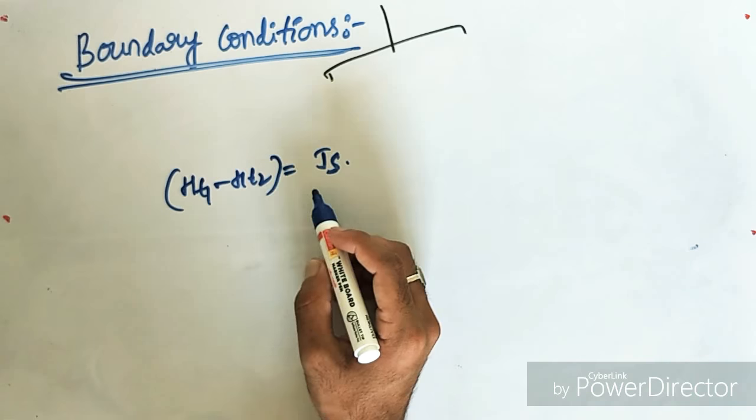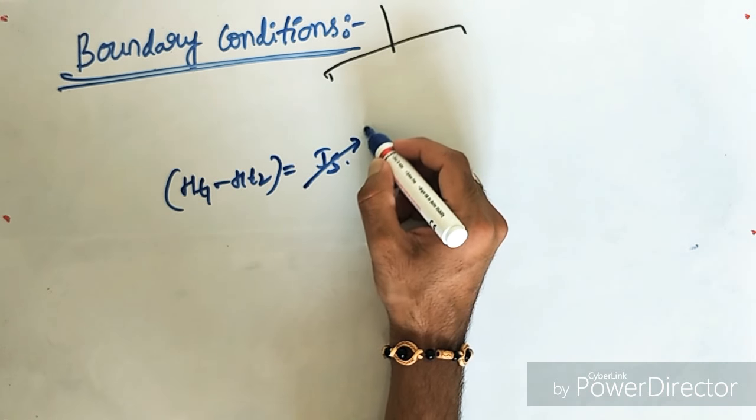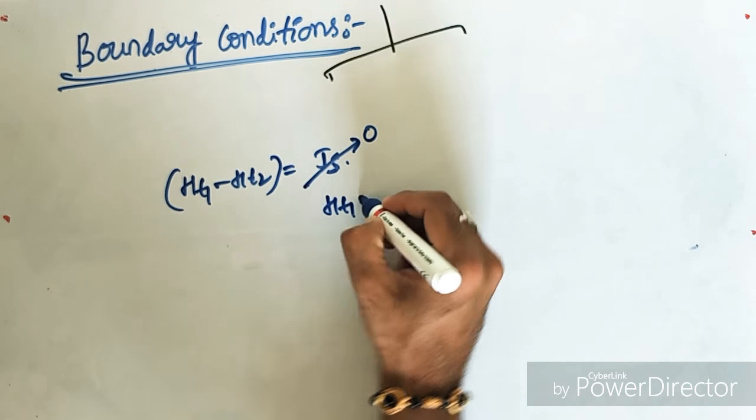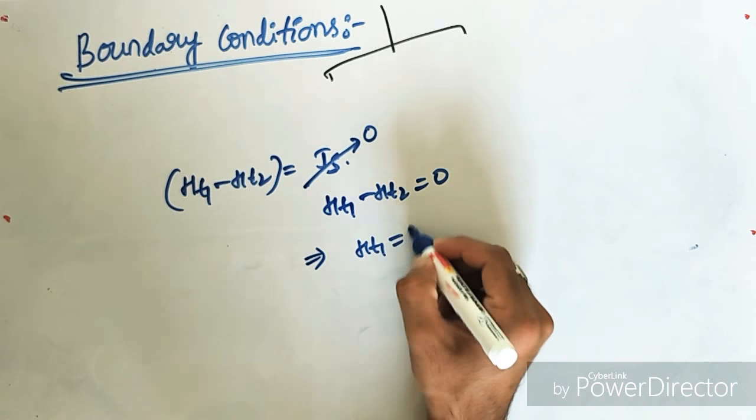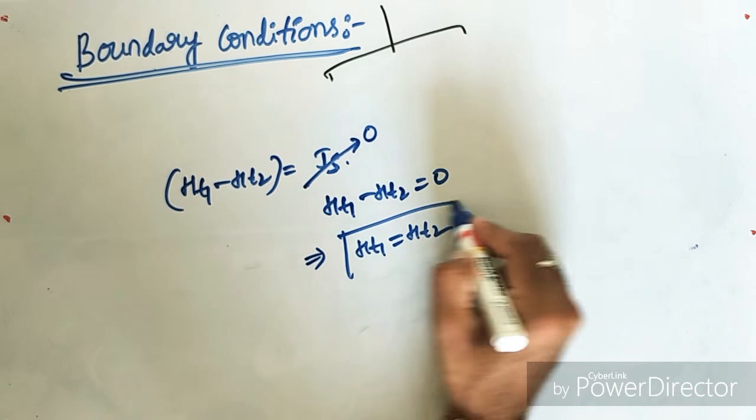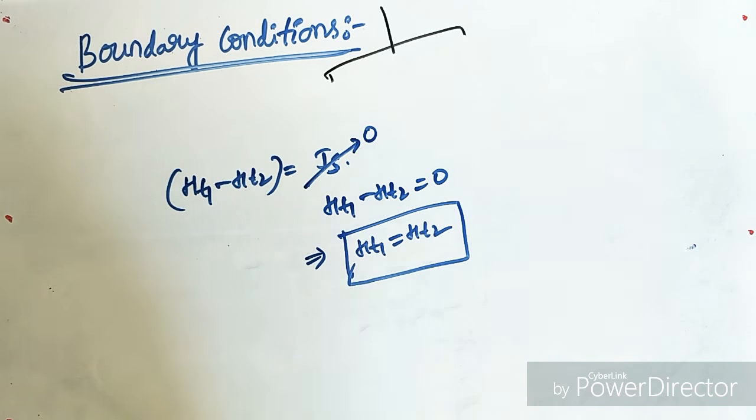So clearly, we can write if the current that is residing on the surface is 0, then it is Ht1 minus Ht2 equal to 0, which implies the tangential components will be equal. And this is the boundary conditions in the magnetic fields.